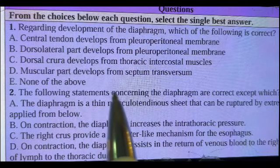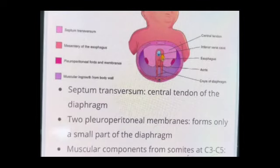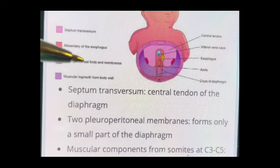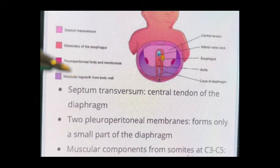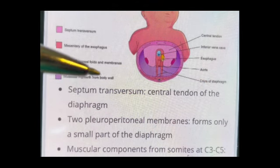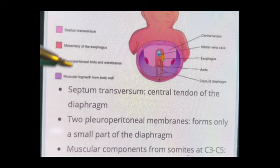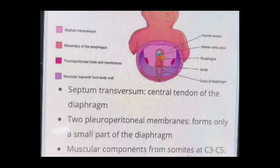Looking at the diagram: the septum transversum here becomes the central tendon. The two pleuroperitoneal membranes form a small part of the diaphragm — the dorsolateral part. The muscular components of the diaphragm come from muscular ingrowth from the body wall, which is the intercostal muscle fibers. And the dorsal crura of the diaphragm come from the esophageal mesentery. These are the four parts of the diaphragm embryologically. It's simple and easy.